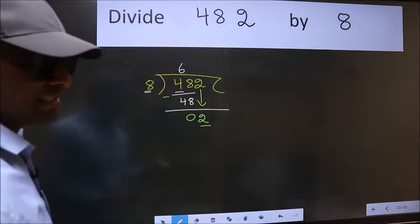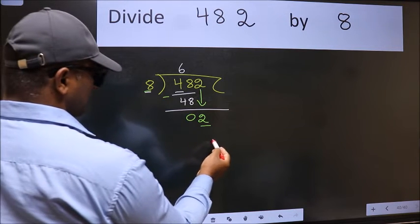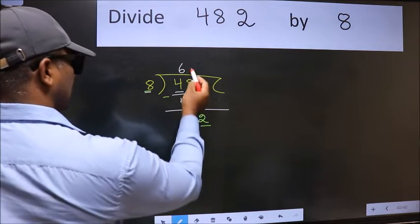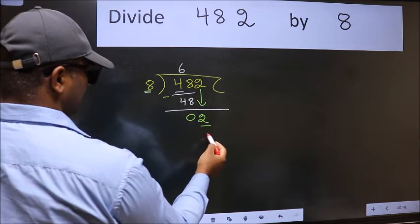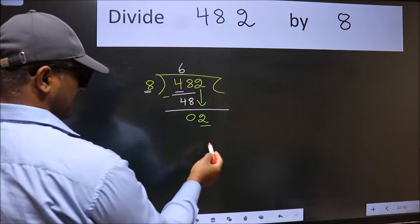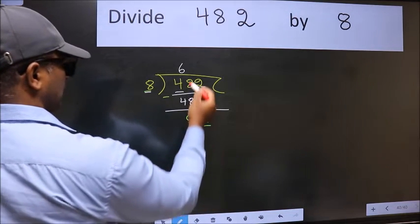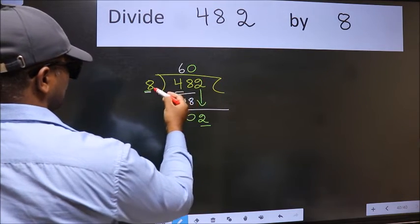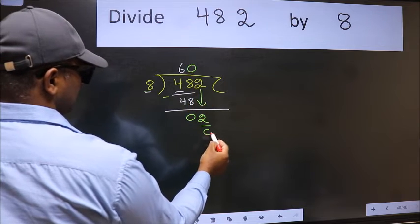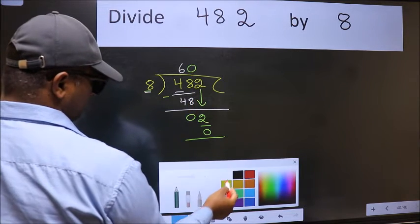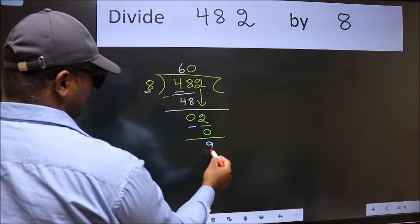instead of that, what we should think of doing is which number should we take here. If I take 1, we will get 8, but 8 is larger than 2. So what we do is we take 0. So 8 into 0 is 0. Now we subtract. We get 2.